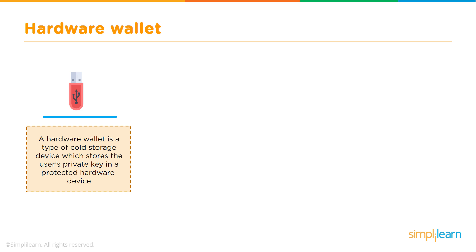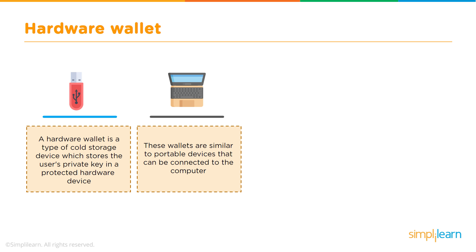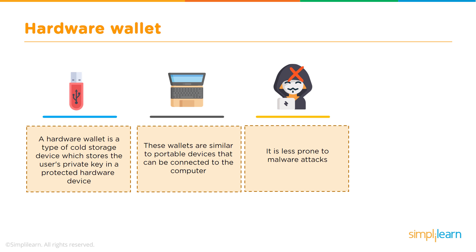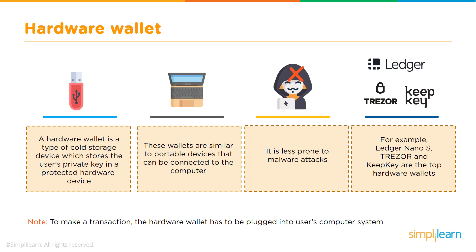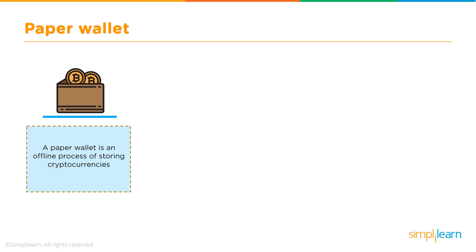A hardware wallet is a type of cold storage device, typically like a USB, which stores the user's private key in a protected hardware device. These wallets are portable and can be connected to the computer. They are less prone to malware attacks and are hack-proof. Examples are Nano Ledger, Trezor, and KeepKey. To make a transaction from your hardware wallet, you must ensure it is plugged into your computer system first.